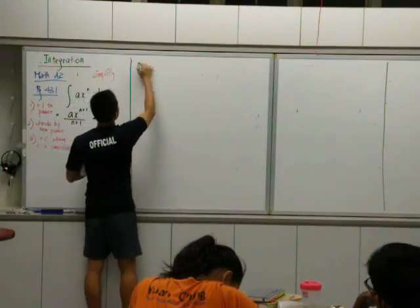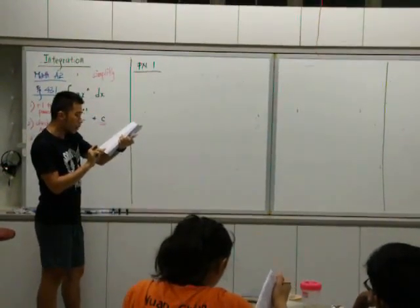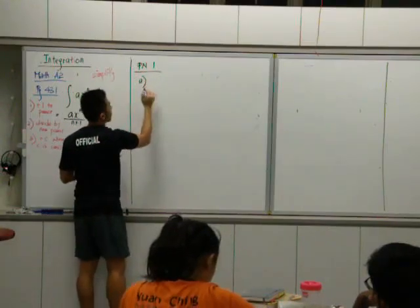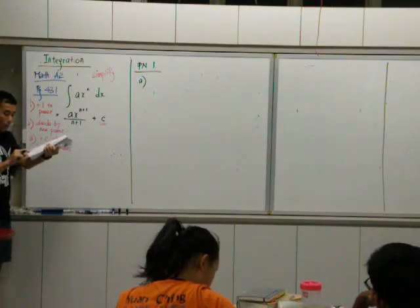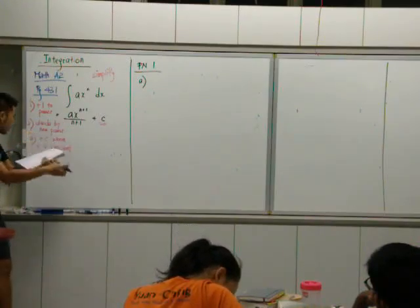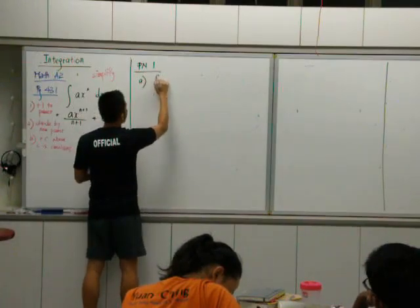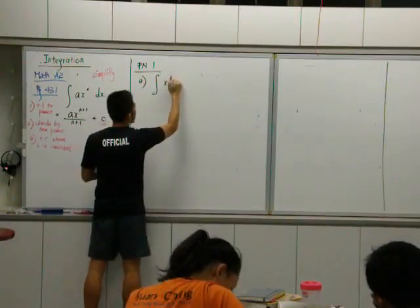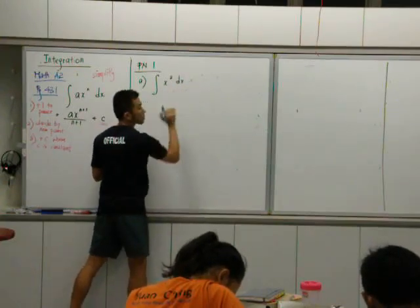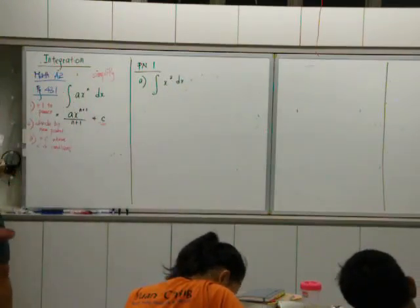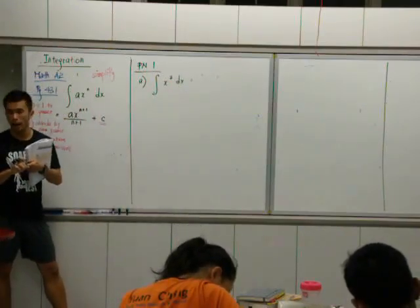Let's do practice now one, page 431. Let's take a look at the first one, part A. Integrate, find the integral of each of the following. I will integrate x cubed with respect to x.